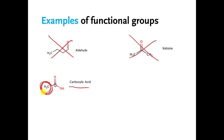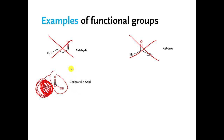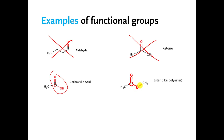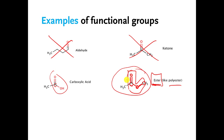It doesn't matter whatever else is attached there — if you have this carboxylic acid pattern stuck onto any molecule, it is that molecule with a carboxylic acid. If you have a carbon double bonded to an O, single bonded to an O, and then that O is single bonded to another carbon, this particular pattern is called an ester functional group. If you've ever heard the word polyester, like a polyester suit, that suit is made of molecules that have this particular pattern over and over again.